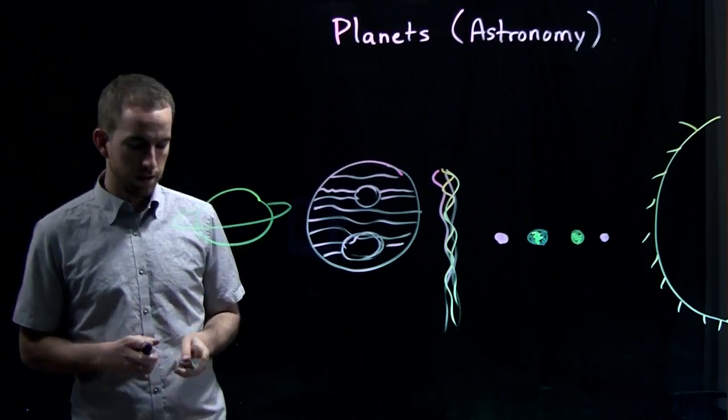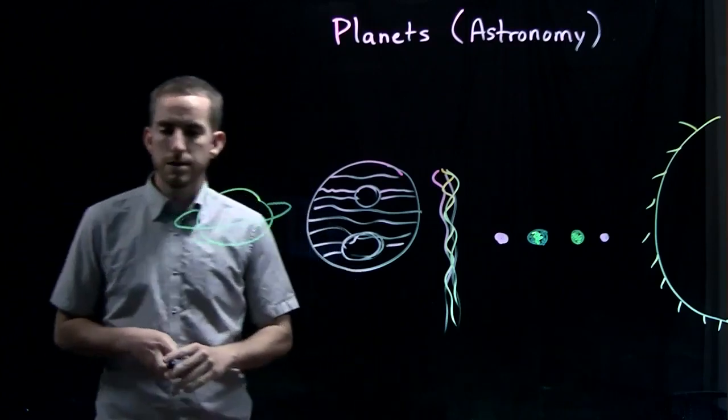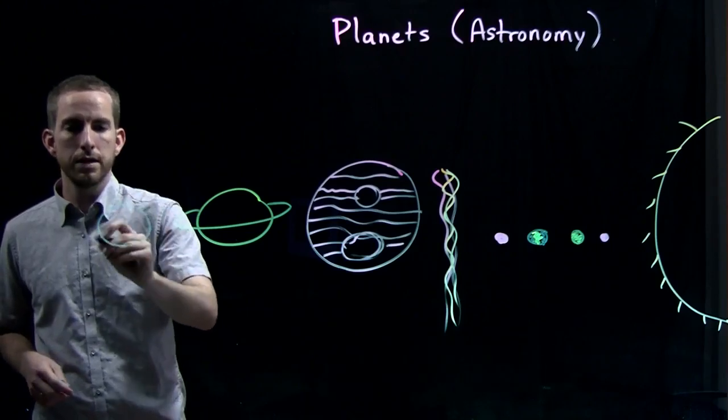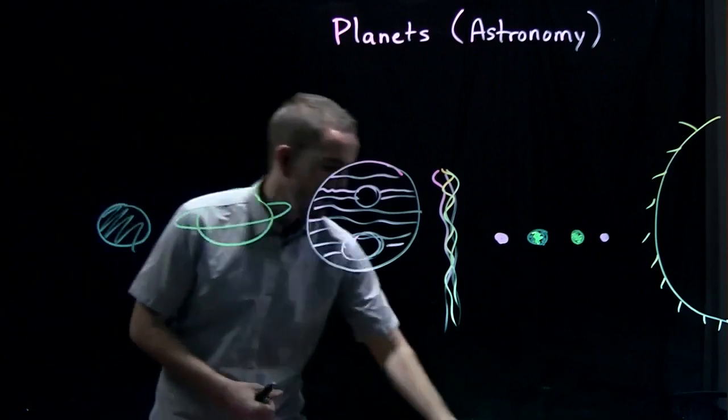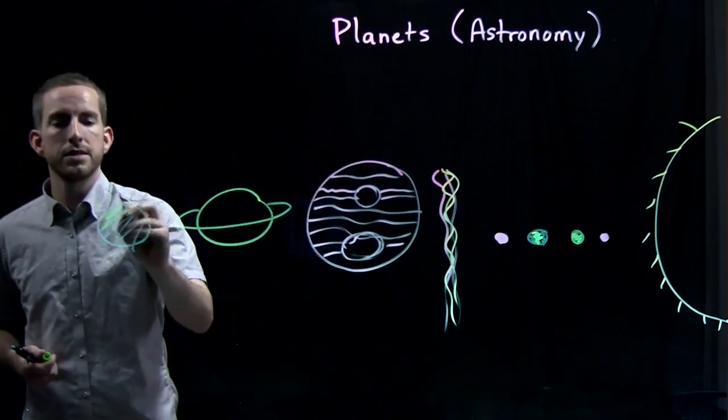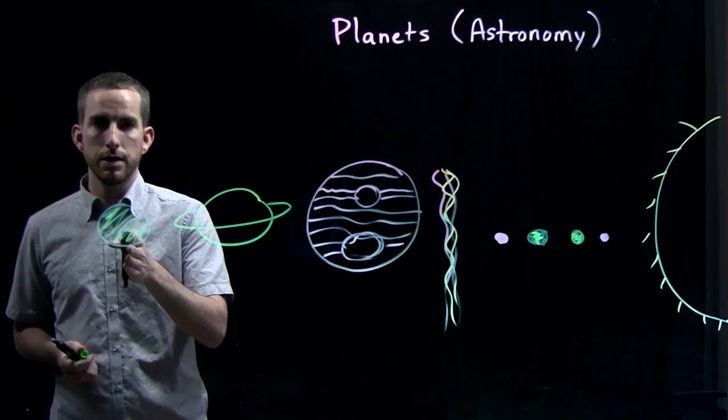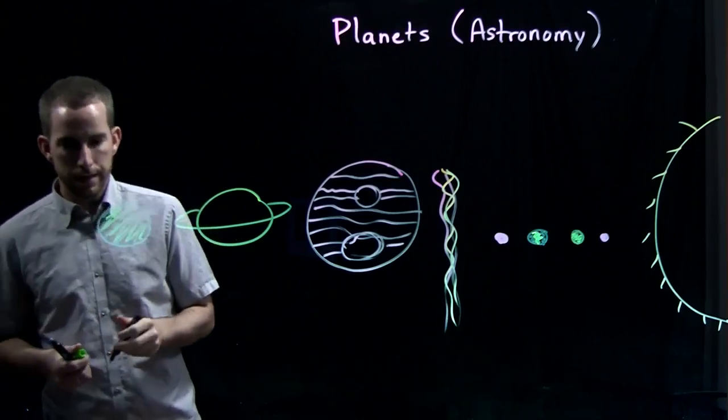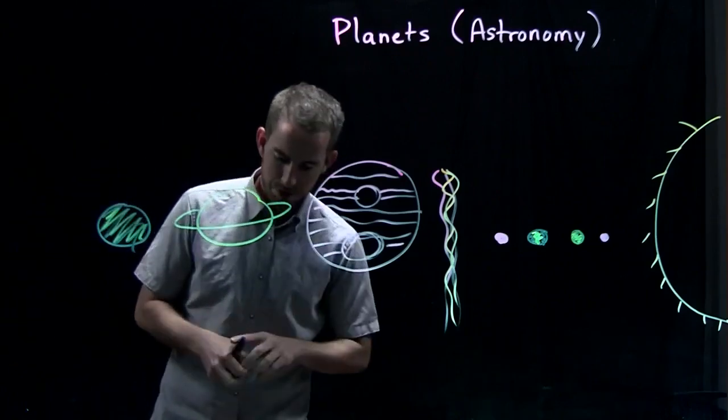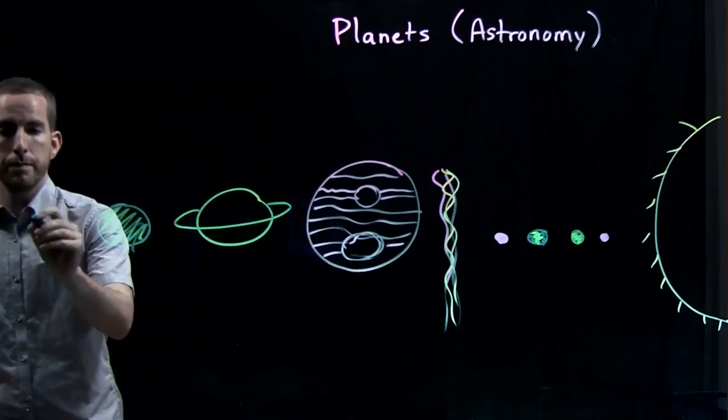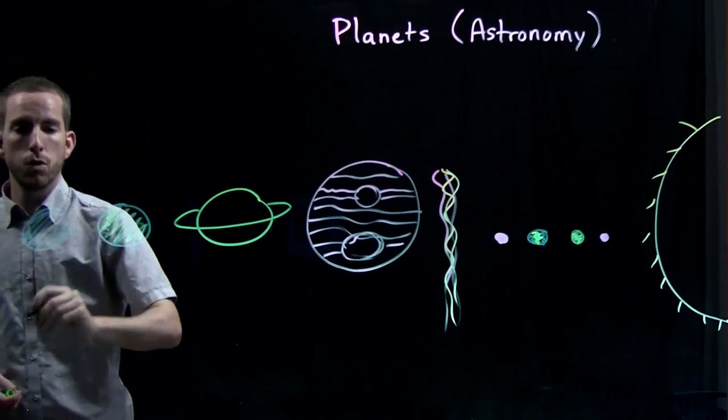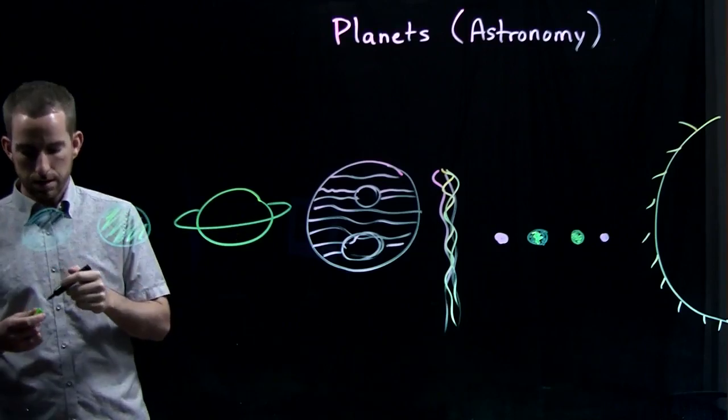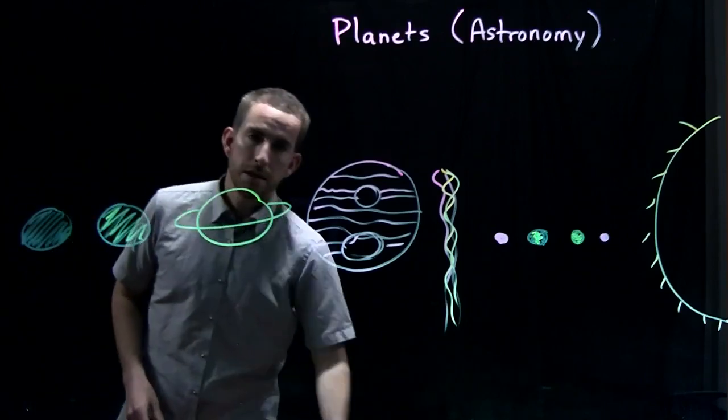And after Saturn comes Uranus. Uranus is big. It's a blue color. A little bit green. Uranus. In Korean 천왕성. And the last one is Neptune. Neptune is blue. Neptune in Korean 해왕성.